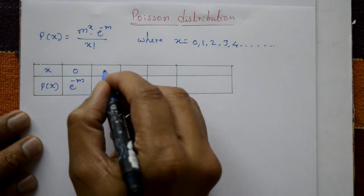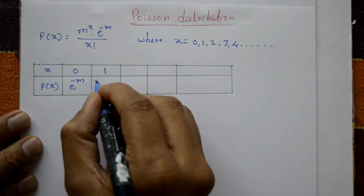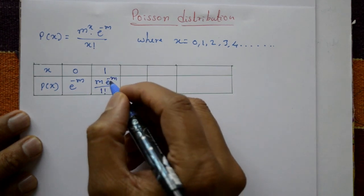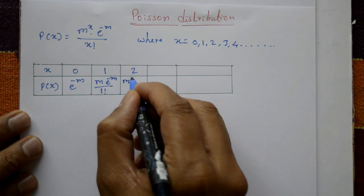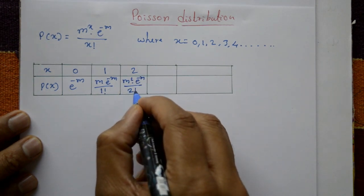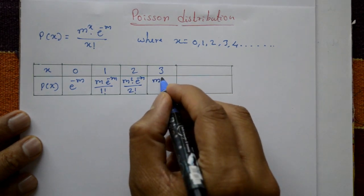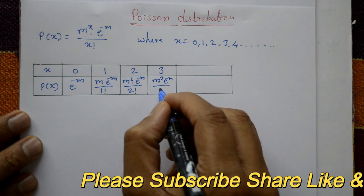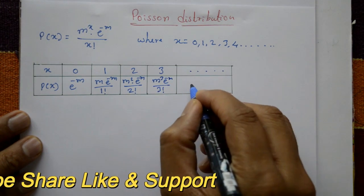For x = 1: P(1) = m * e^(-m) / 1!. For x = 2: P(2) = m² * e^(-m) / 2!. For x = 3: P(3) = m³ * e^(-m) / 3!, and so on.